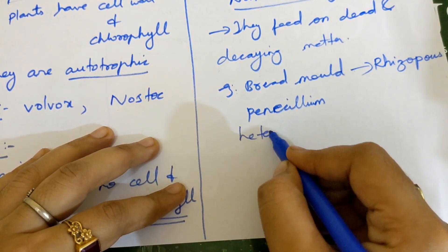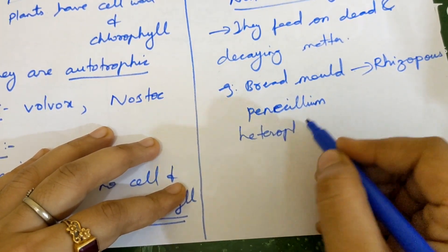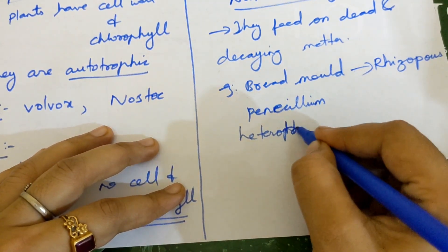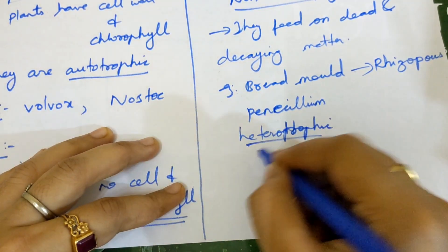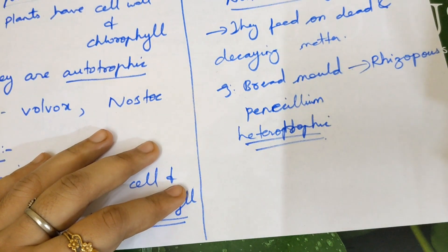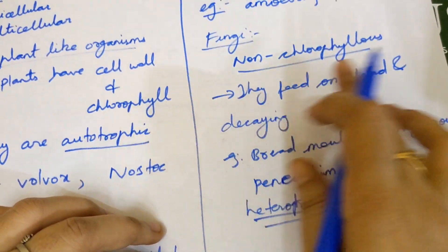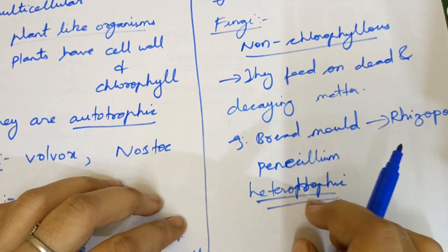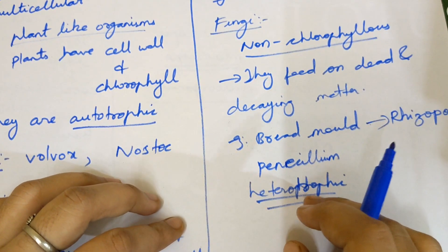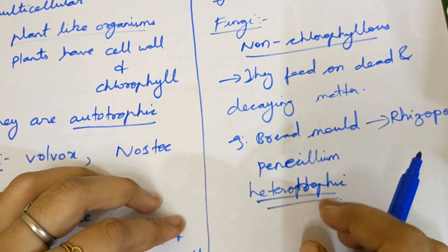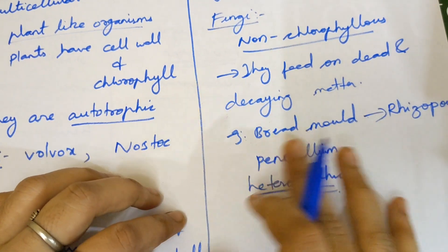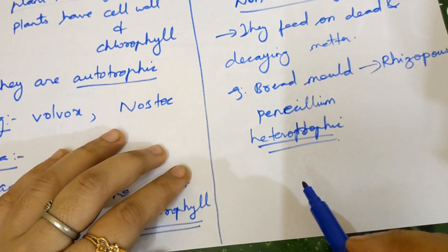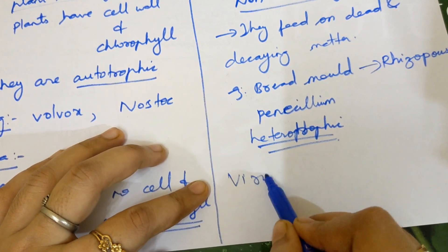Fungi are heterotrophic in nature because there is no chlorophyll, so they cannot prepare food on their own. They depend on other organisms for their nutrition.